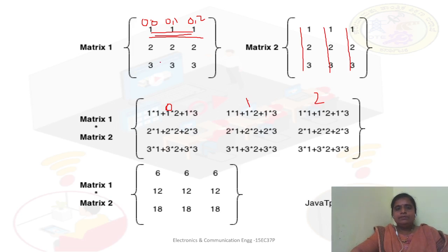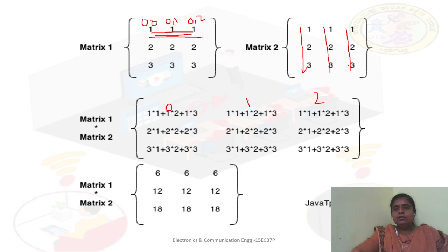Once we have the idea of the subscripts, we combine 0 with 0, 0 and 1, and 0 and 2. This is the way we are going to have the multiplication: first row with first column, first row with second column of matrix 2, first row of matrix A with the third column of matrix 2. This is how we are going to get the elements row-wise.